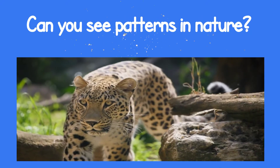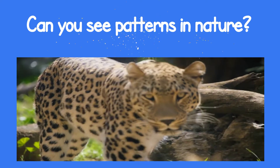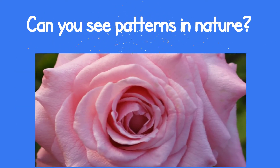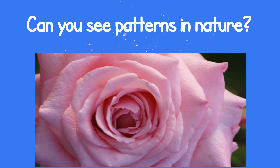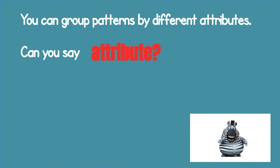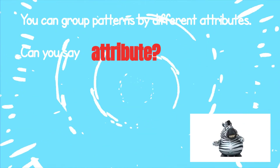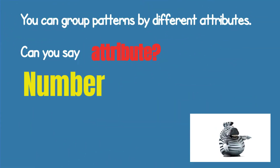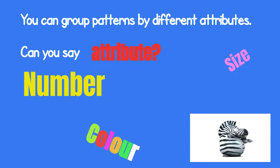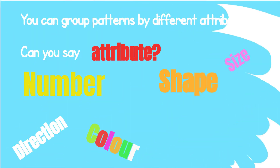I see a leopard. I see a growing pattern here. You can group patterns by different attributes. Can you say attribute? Attribute. Number. Size. Color. Shape. Direction.